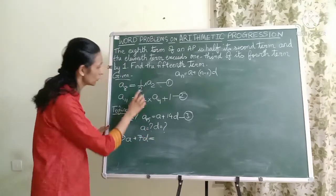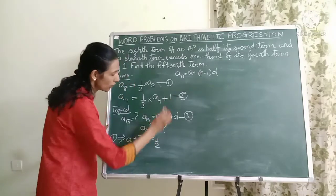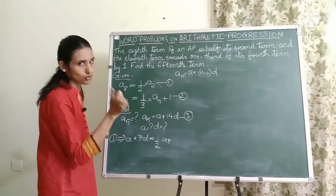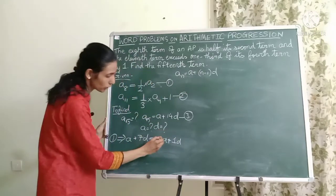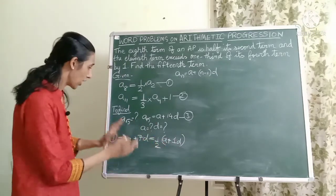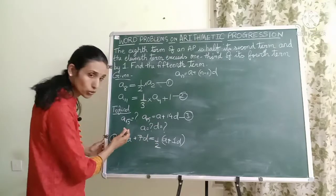That is equal to half of A2. So what is A2? It is A plus 2 minus 1 times D, so 1D. Remember to put a bracket. Now all I need to do is just do a little bit of algebra. Bring the 2 to the other side.